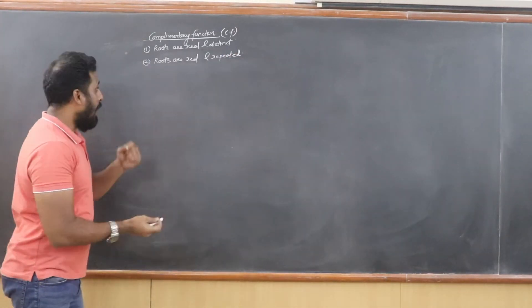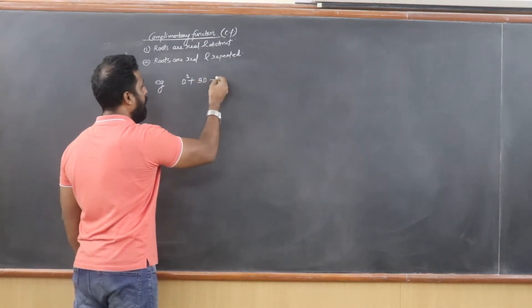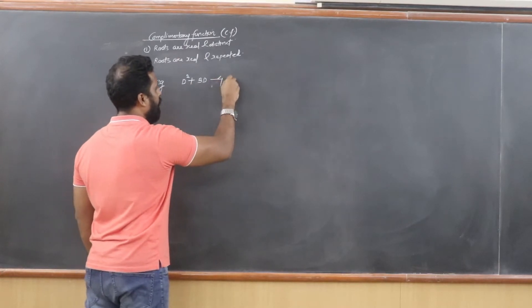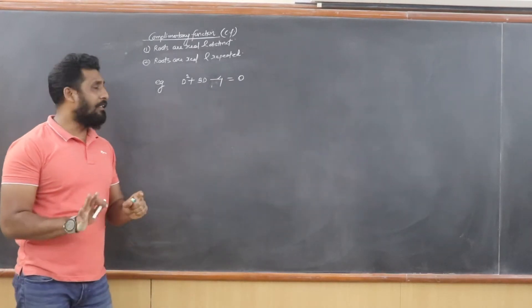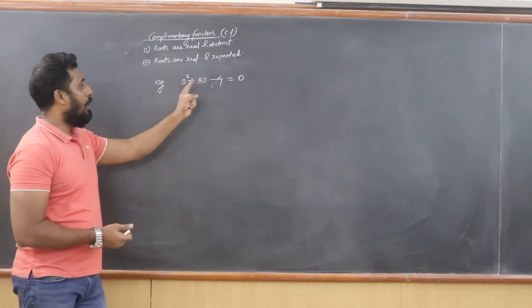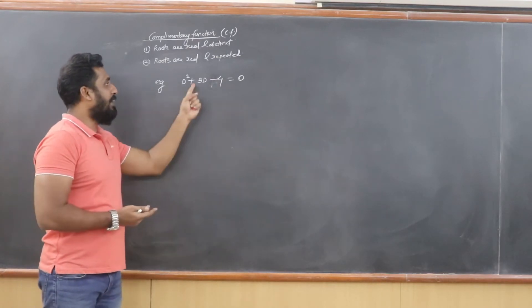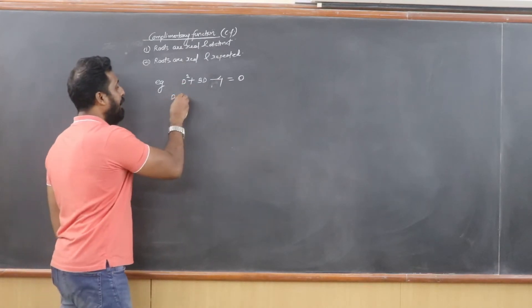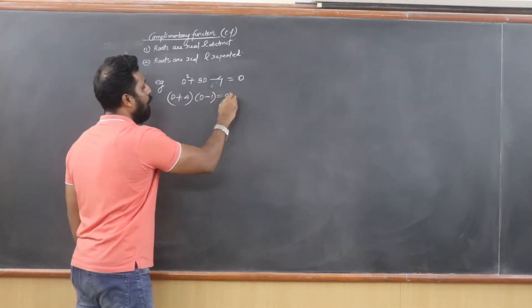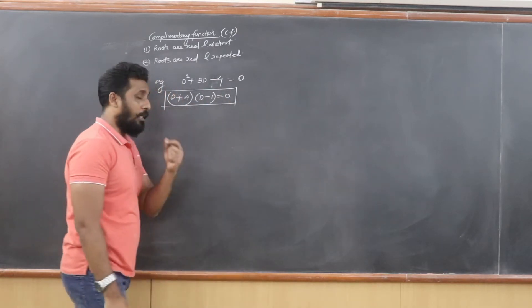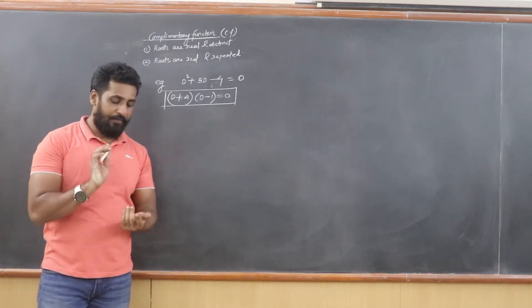For example, consider d² + 3d - 4 = 0. This is a quadratic equation with 2 roots. We can factor it as -4 = 4×(-1), giving factors (d + 4)(d - 1) = 0. So the roots are real, but no value is repeated here.